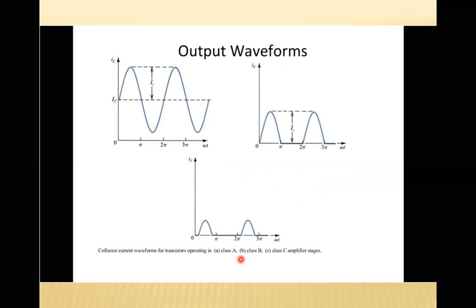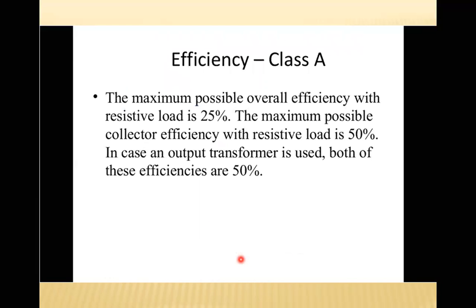Let us summarize by reviewing efficiency, linearity, and other factors for all classes. For Class A: the maximum possible overall efficiency with resistor load is 25 percent; the maximum possible collector efficiency with resistor load is 50 percent. If an output transformer is used, both efficiencies become 50 percent.